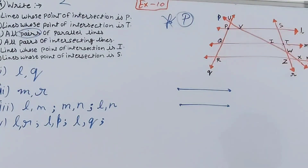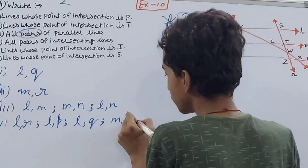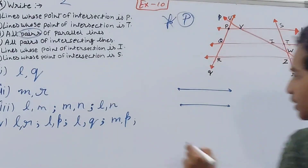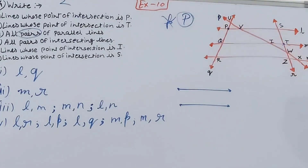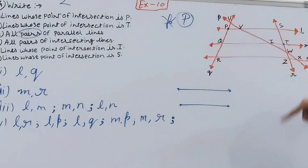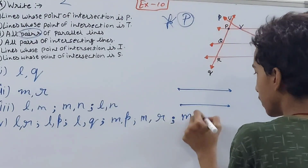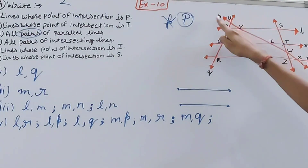Moving on to line m: m intersects with p, giving pair m and p. Line m intersects with r at point T, giving pair m and r. Line m also intersects with q, giving pair m and q. All pairs involving line m are now done.